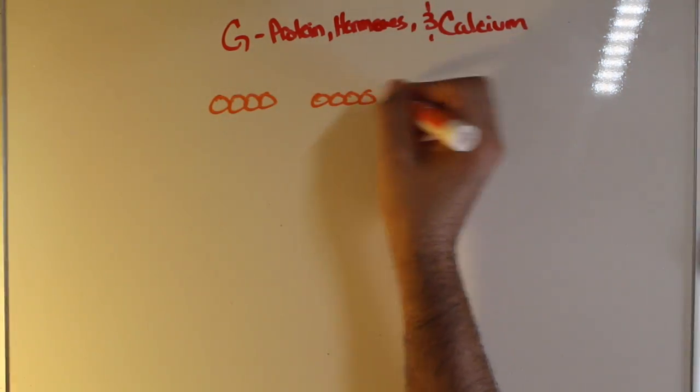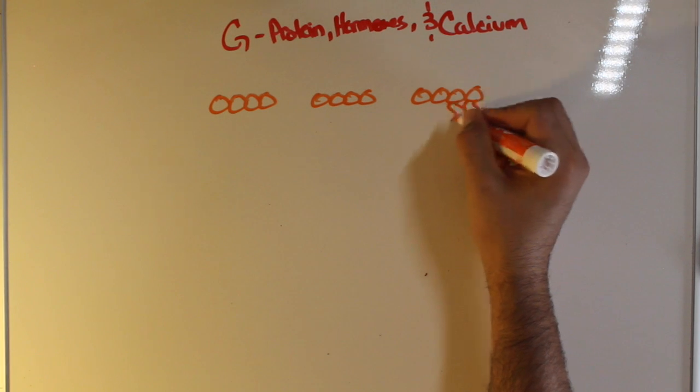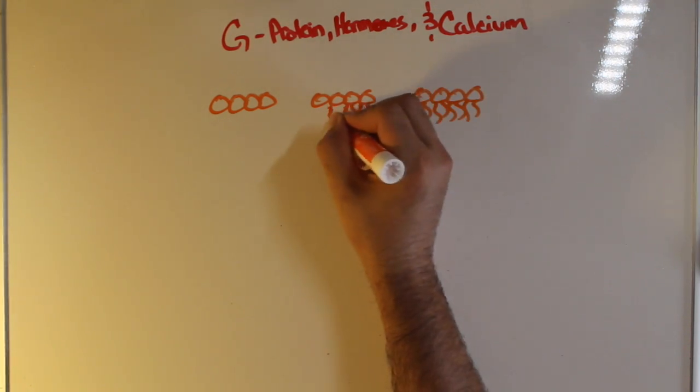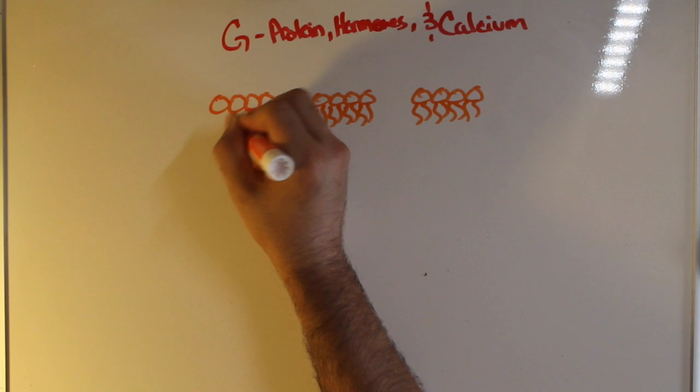First thing is let's go ahead and orient ourselves to the picture. Here we have our phospholipid bilayer. Now remember this is a two-layered membrane.